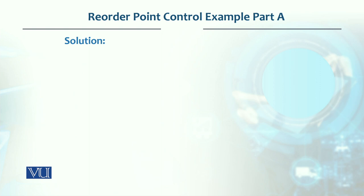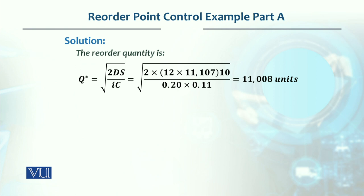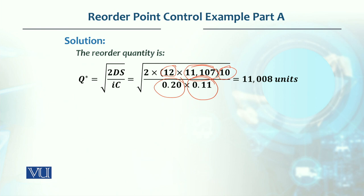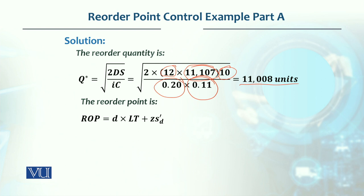Let's look at the solution. Economic order quantity is calculated. D is annual demand — the monthly demand given was multiplied by 12 to get annual demand. So 2DS, where S is $10. IC is used since H is not given in monetary terms; I was given as 20% per annum and C, the unit cost, is $0.11. Solving this gives us EOQ of 11,008 units — this is the order quantity to achieve lowest total annual inventory cost.